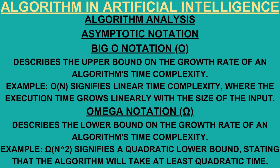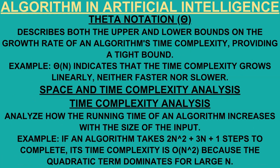Algorithm analysis — asymptotic notation. Big O notation describes the upper bound on the growth rate of an algorithm's time complexity. For example, O(n) signifies linear time complexity where execution time grows linearly with input size. Omega notation describes the lower bound; for example, Ω(n²) states that the algorithm will take at least quadratic time. Theta notation describes both the upper and lower bounds, providing a tight bound. For example, Θ(n) indicates that the time complexity grows linearly, neither faster nor slower.